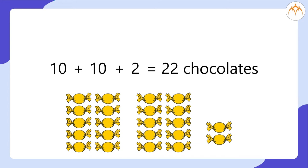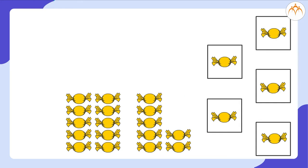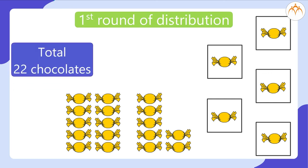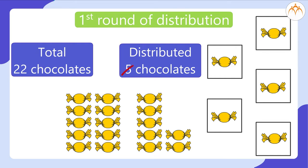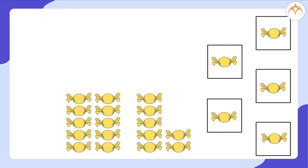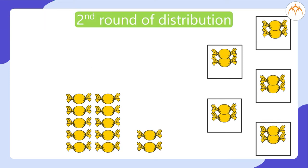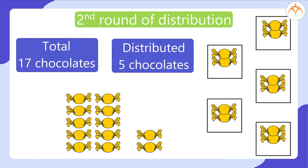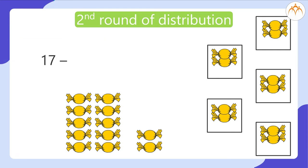Now I can start distributing these 22 chocolates among 5 friends. Let's give 1 chocolate to each one. So after the first round of distribution, out of 22 chocolates I distributed 5, which means 5 got subtracted from 22 and I am left with 22 minus 5 equal to 17 chocolates. Again I give 1 chocolate to each one, so 5 got subtracted from 17, leaving 17 minus 5 equal to 12 chocolates.